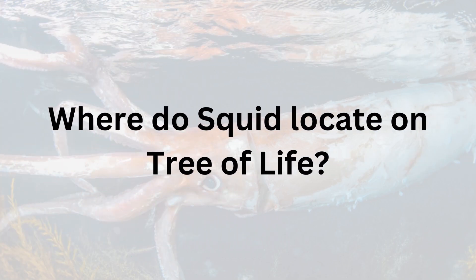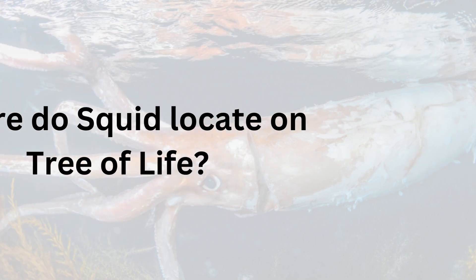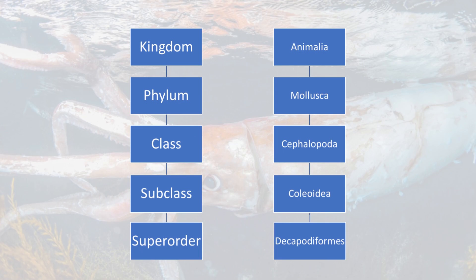Where do squid locate on the tree of life? Squid belong to the phylum Mollusca, which is a diverse group of invertebrate animals that include snails, clams, and octopuses. More specifically, squid are a member of the class Cephalopoda, which also includes octopuses, cuttlefish, and nautiluses. Within the class Cephalopoda, squid are in the order Teuthida. So on the tree of life, squid can be located under kingdom Animalia, phylum Mollusca, class Cephalopoda, and order Teuthida.